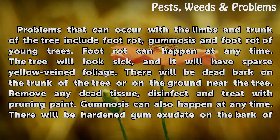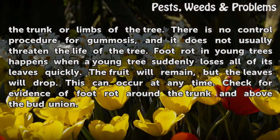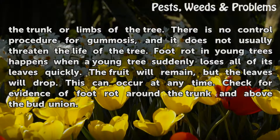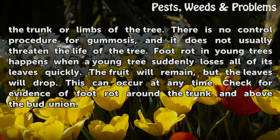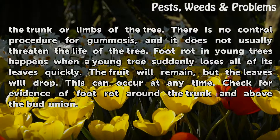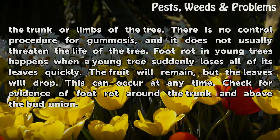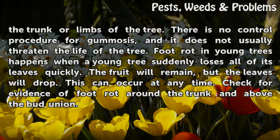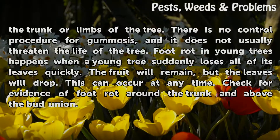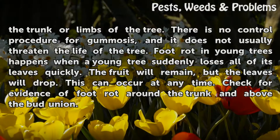Gummosis can also happen at any time. There will be hardened gum exudate on the bark of the trunk or limbs of the tree. There is no control procedure for gummosis, and it does not usually threaten the life of the tree. Foot rot in young trees happens when a young tree suddenly loses all of its leaves quickly. The fruit will remain, but the leaves will drop. This can occur at any time. Check for evidence of foot rot around the trunk and above the bud union.